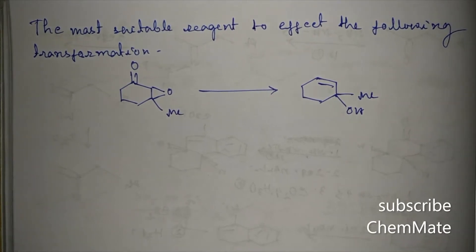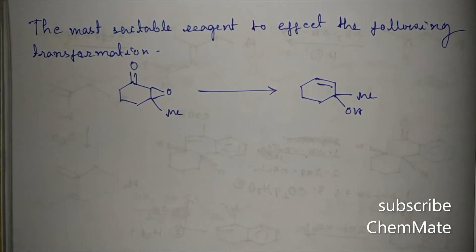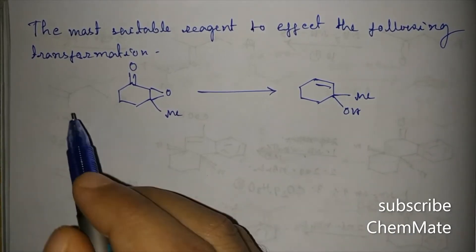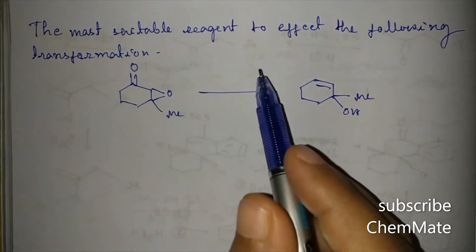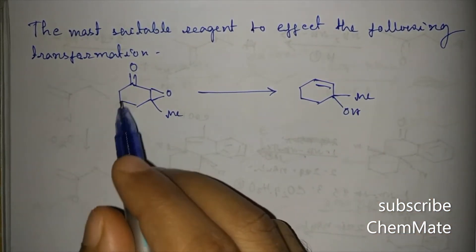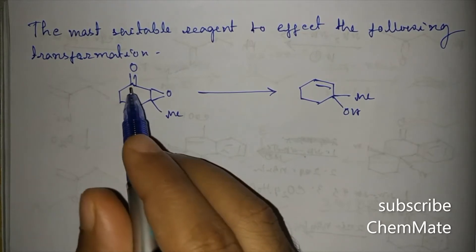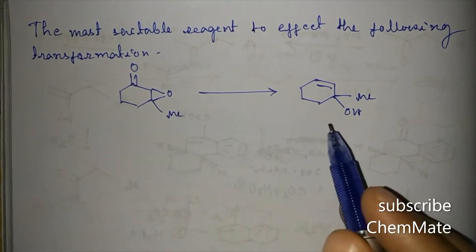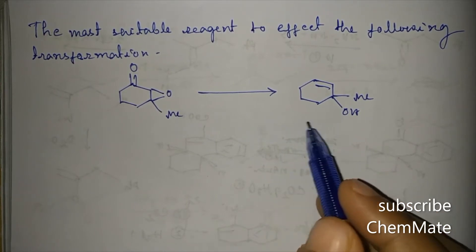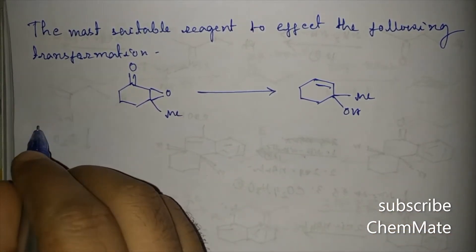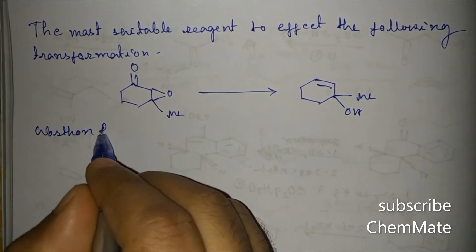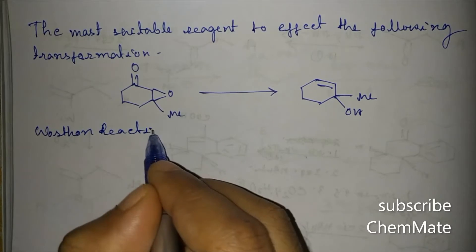Today I am going to discuss some questions from GATE 2015. The first question asks for the most suitable reagent to effect a transformation where an alpha-beta epoxy ketone is converted to an allylic alcohol. This is an important name reaction called the Wharton reaction.